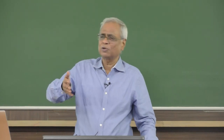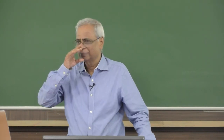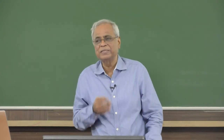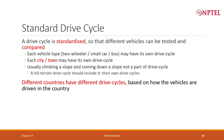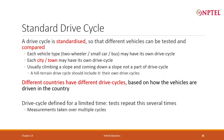The drive cycle will also take into account average roads and speed limits — you are not supposed to drive faster than the speed limit. Normally, a drive cycle is never defined for 100 kilometers. It is defined for smaller distances: 2 kilometers, 2.5 kilometers. Then you keep on repeating that cycle.